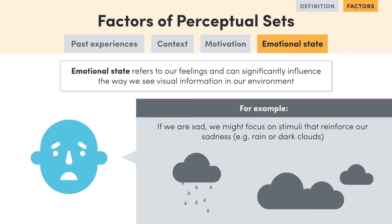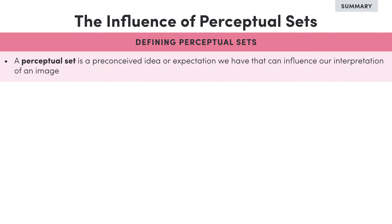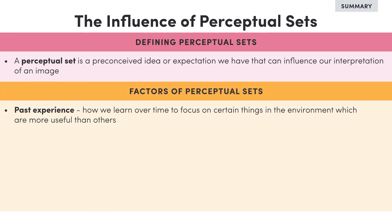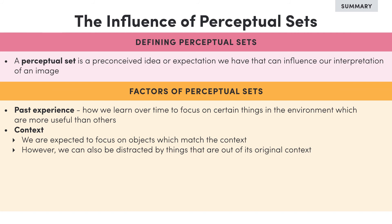So to wrap up, we know that a perceptual set is a preconceived idea or expectation that we have that can influence our interpretation of an image. There are a range of factors that can influence a perceptual set, such as past experience. We learn over time to focus on certain things in our environment which are more useful than others. Context also affects a perceptual set as we expect to focus on objects which match the context. This also means that we can be distracted by things that are out of their original context.